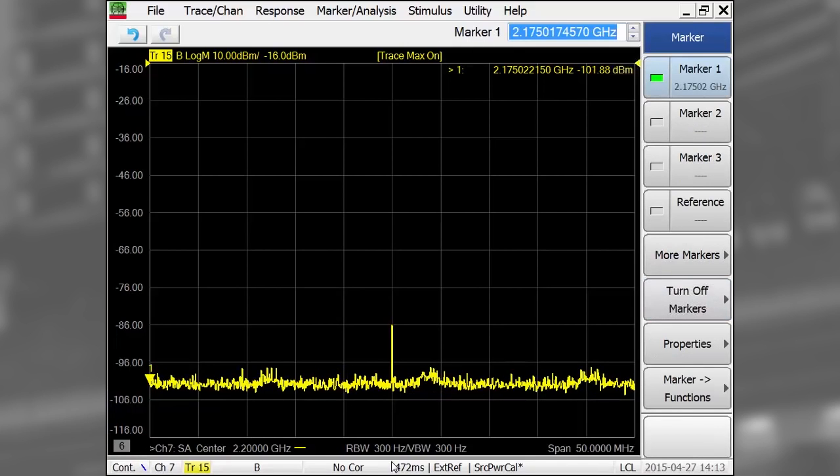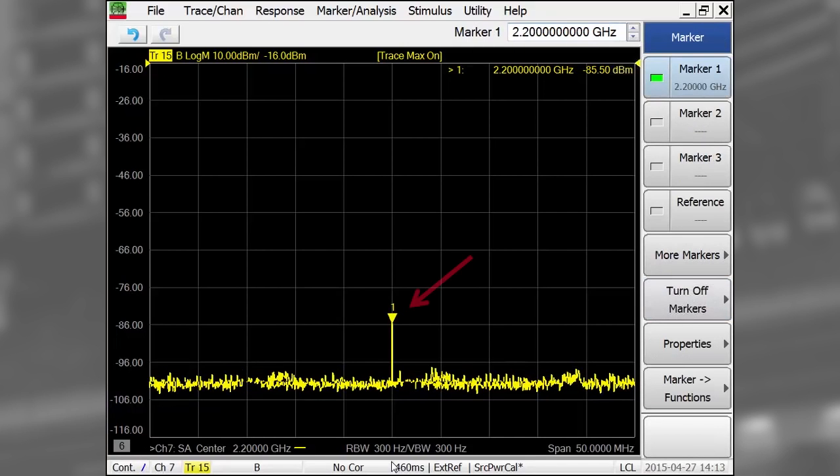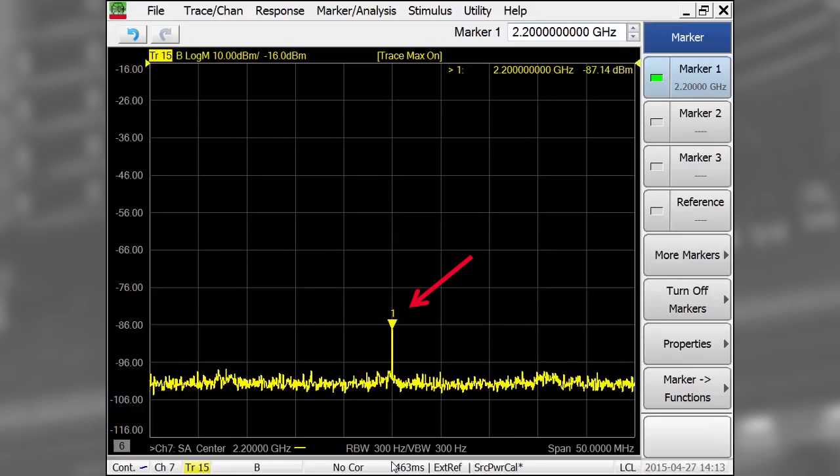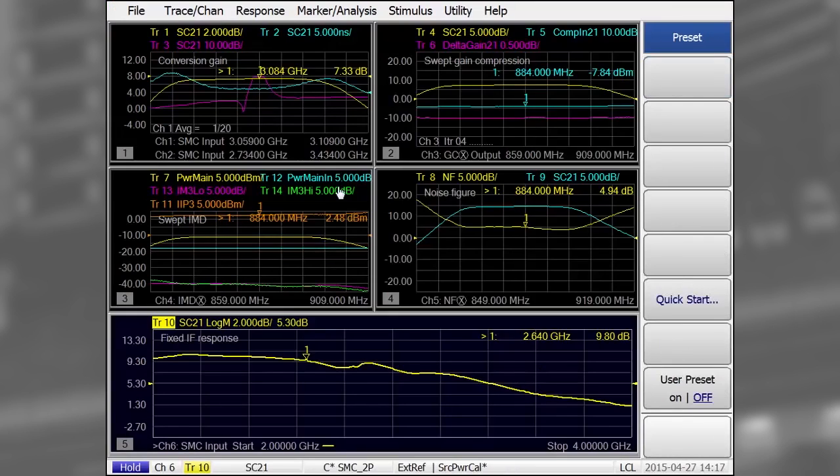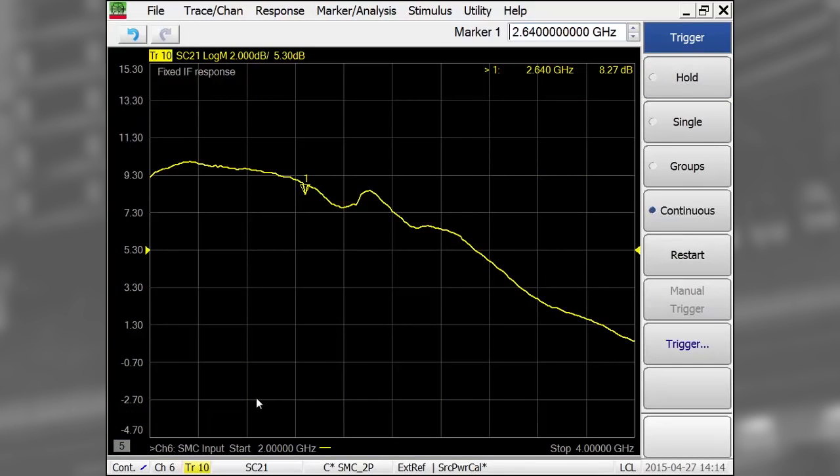Zooming in with the spectrum analyzer, I see the LO feed-through has been knocked down to minus 85 dBm. Now, let's take a look at the fixed IF response of the converter, which is used to measure the front-end bandwidth.